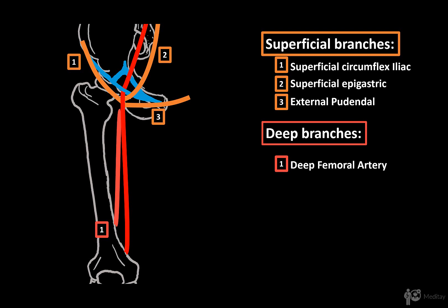As it descends, it gives off small side branches called the perforating branches. In theory there should be three perforating branches, which pierce the medial muscles of the thigh and run posteriorly to supply the posterior muscles of the thigh.